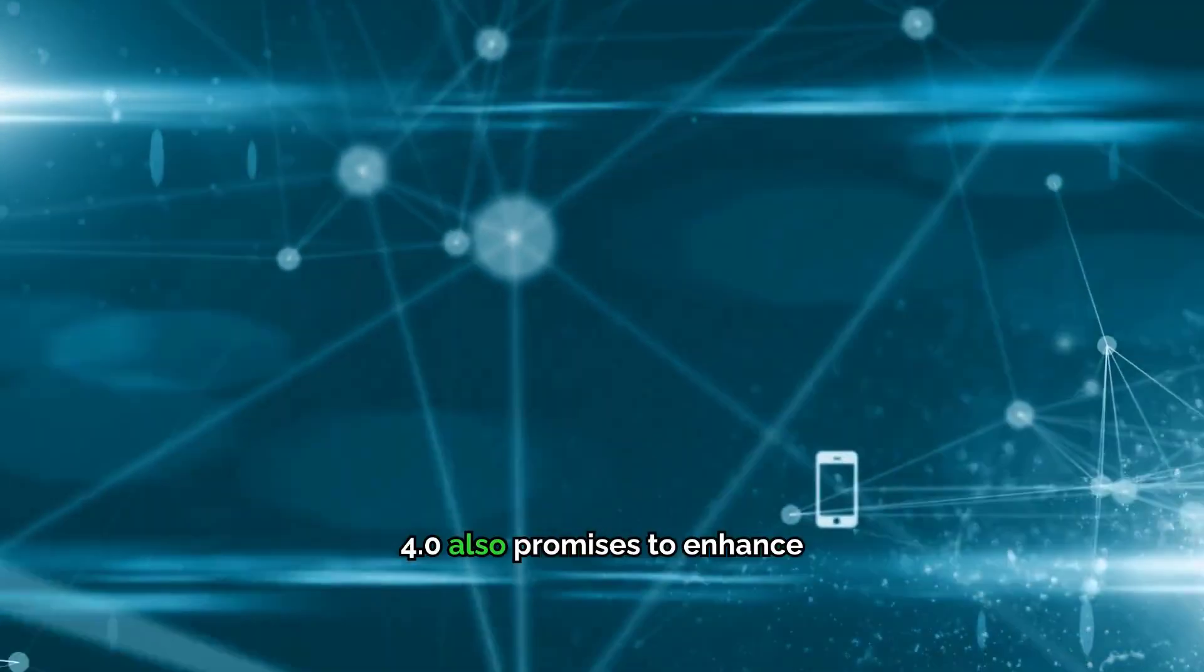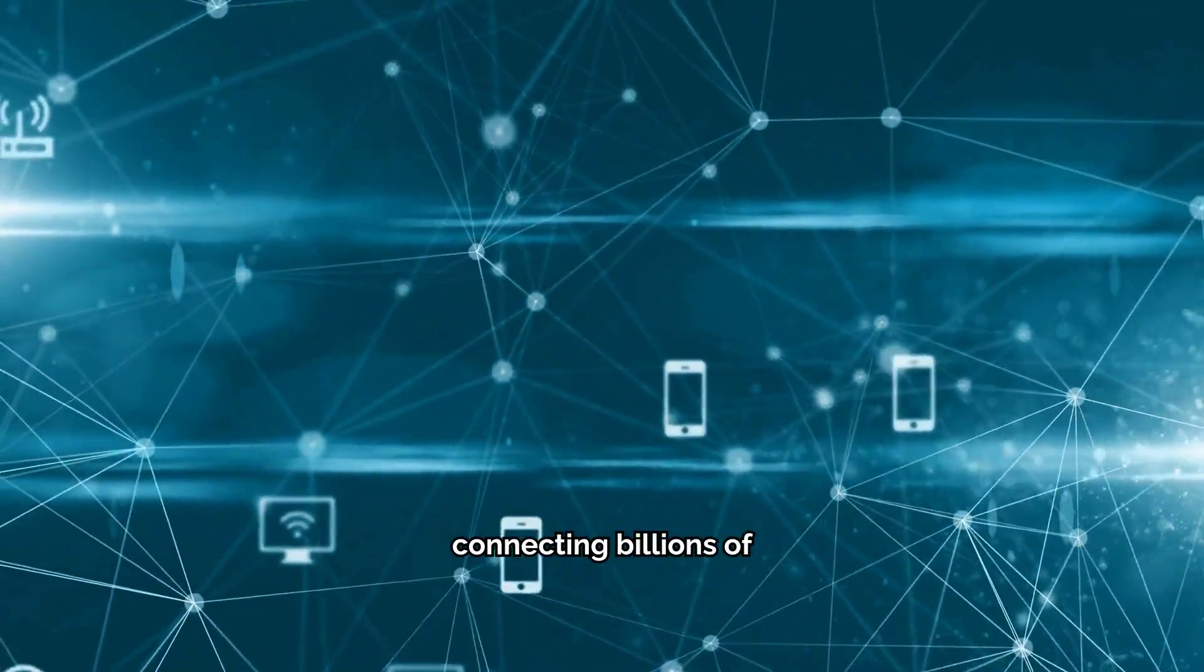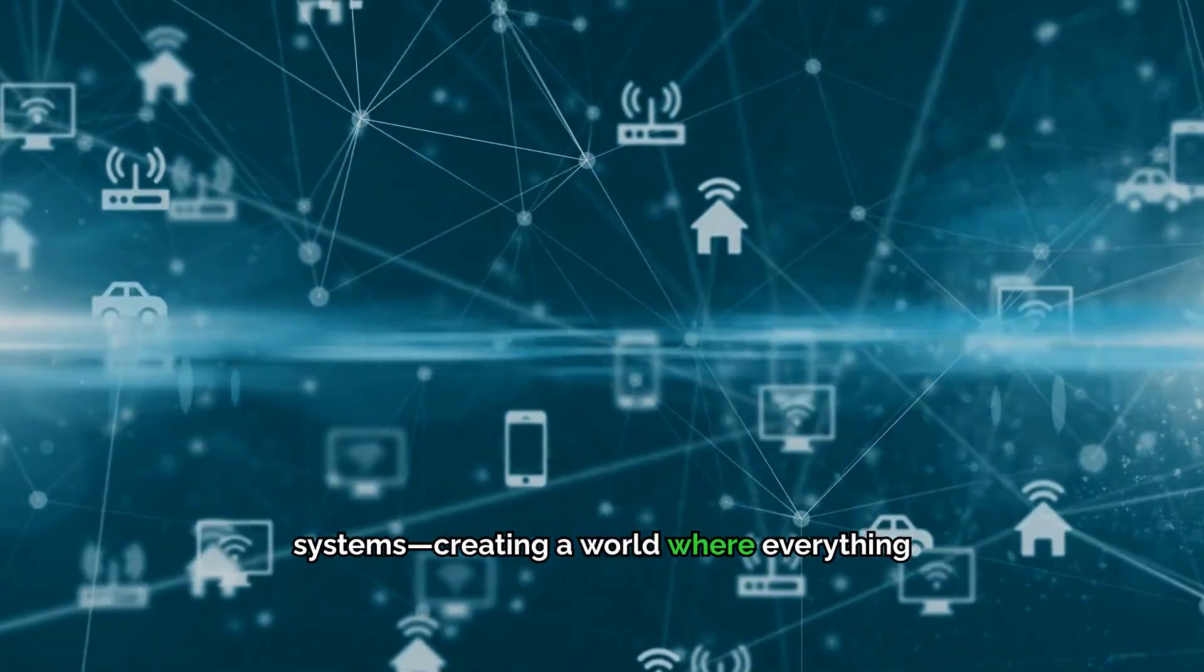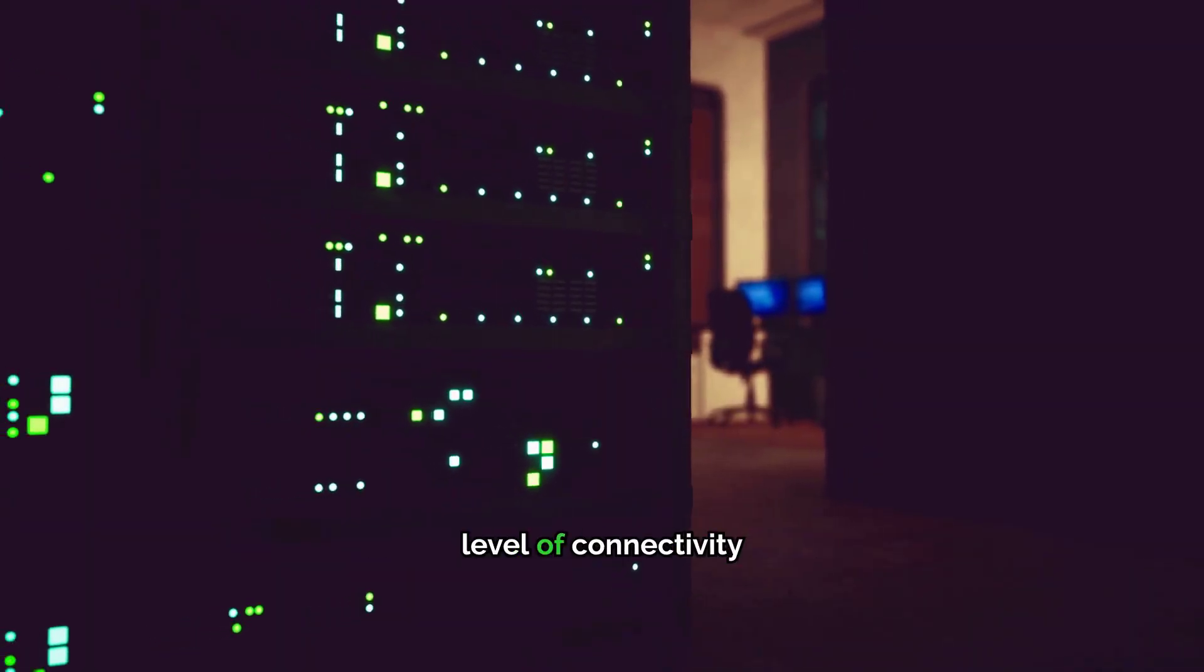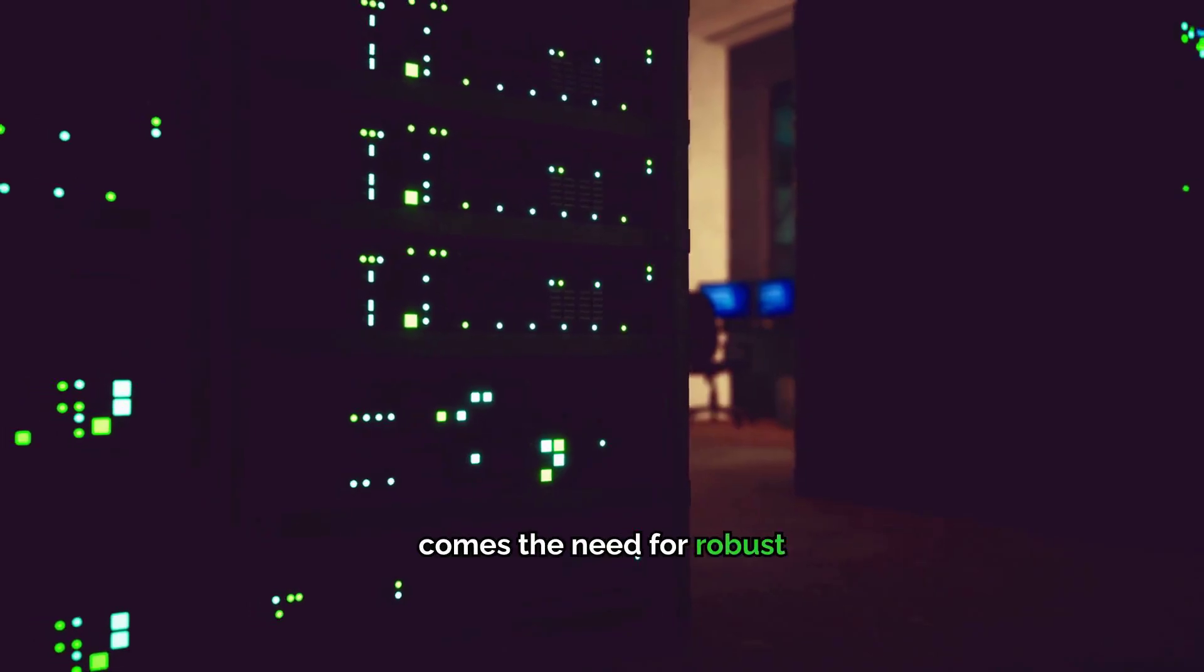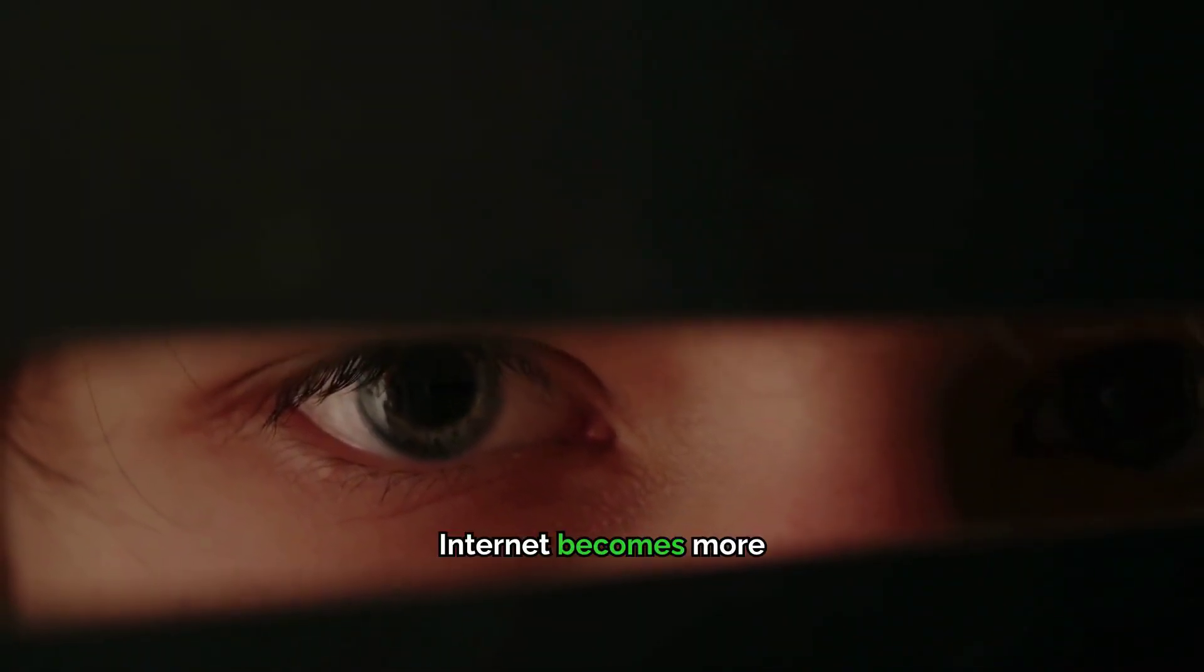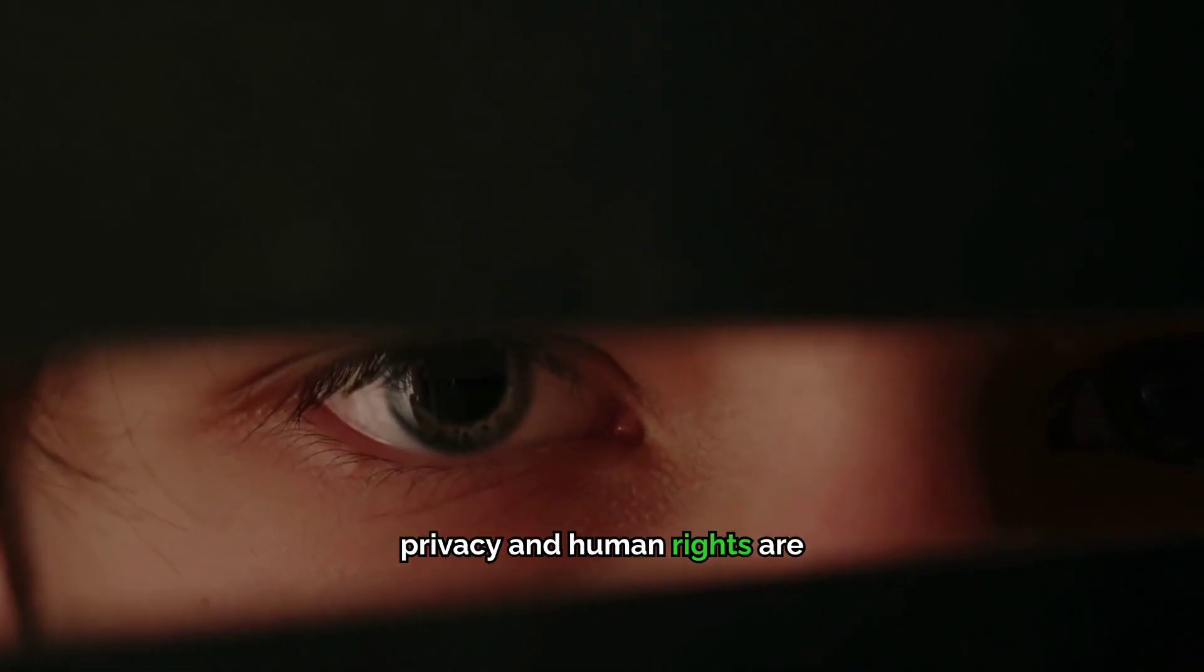Web 4.0 also promises to enhance the Internet of Things, connecting billions of devices, from refrigerators to healthcare systems, creating a world where everything is interconnected. But with this new level of connectivity comes the need for robust security and ethical guidelines. As the Internet becomes more intelligent, how do we ensure that privacy and human rights are protected?